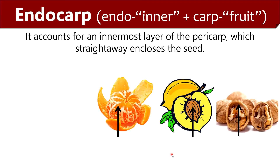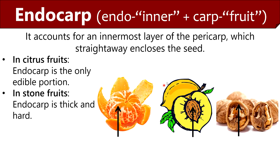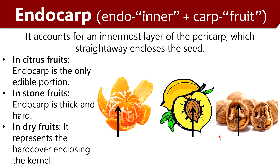The endocarp is the innermost layer of pericarp enclosing the seed. In citrus fruit like orange, the endocarp is the only edible portion that contains juice vesicles. In stone fruit like peach, the endocarp surrounding the seed is usually thick and hard. In dry fruit like walnut, the endocarp functions as a hard cover enclosing the kernel.